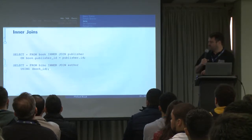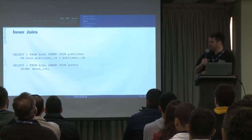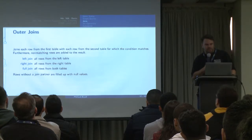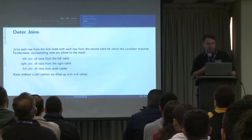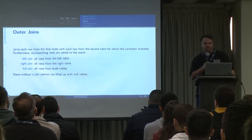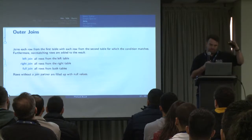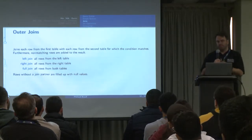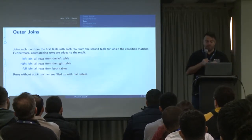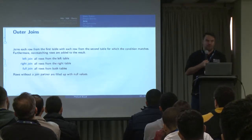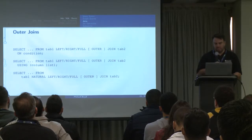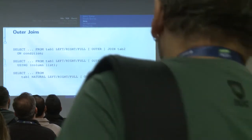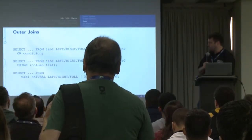Here's an example joining book against publisher on a couple of columns, and here's an example using a USING clause and just specifying book_id — that column exists in both tables. Outer joins are left join, right join, and you can also do full join, which gives you both. It gives you all the records from the left table if you're doing a left join, then fills in values from the right hand table if there's a matching row, or nulls if there isn't.